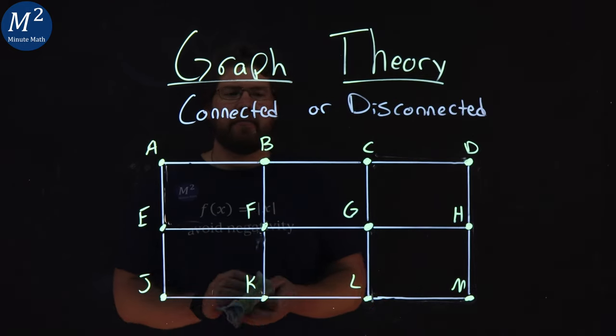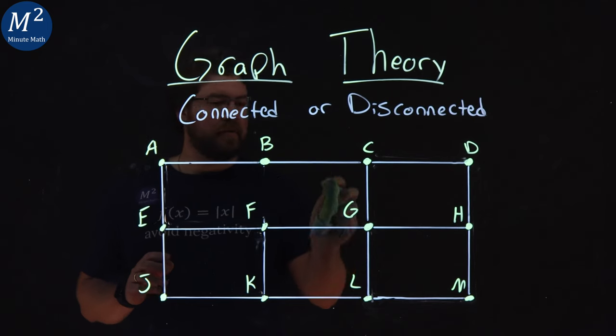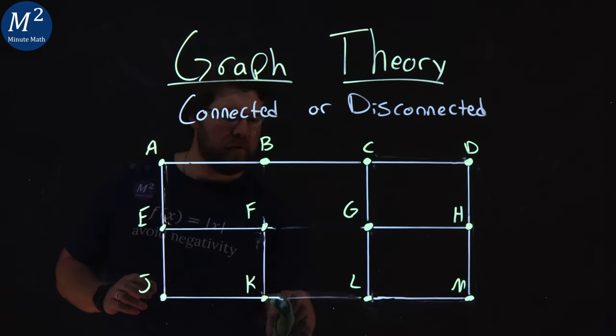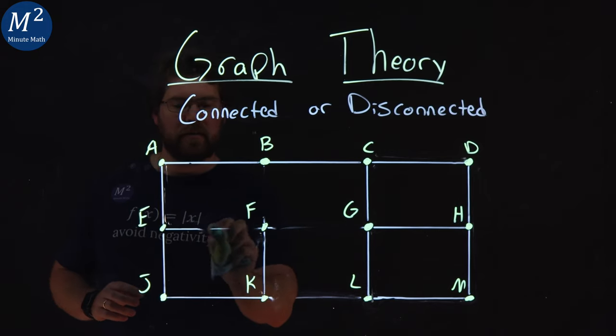Now, if I was to have a disconnected graph, we have something like this. Let's erase this edge here.